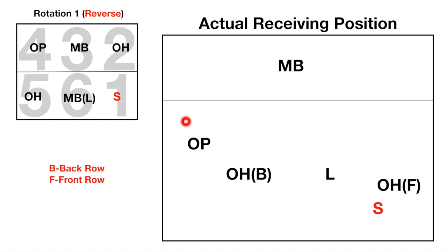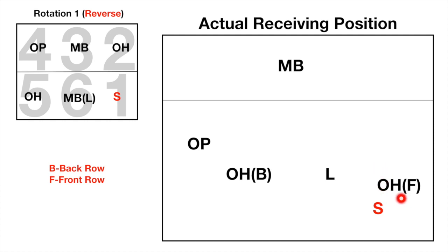Now let's move to the actual receiving position of rotation one. The outside hitter from the front row falls back to the back row to receive. This is acceptable according to the rules because the front row outside hitter is only relative to the middle blocker and center, so he only needs to stand to the right of the middle blocker before the setter from the back row.